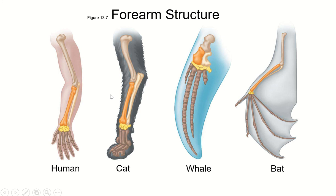Forearm structure in mammals is a homology. The human arm, the cat arm, the whale flipper, and the bat wing all have the same bones: the humerus, radius, and ulna, then carpal bones, metacarpals, and phalanges making up the digits. In the whale, the humerus, radius, and ulna are much shortened and the digit bones are much longer with more bones in the digits. In the bat, the metacarpals and phalanges are very long to hold the edge of the wing — but we see the same bones in the same order, because the common ancestor had this bone structure.